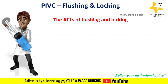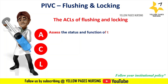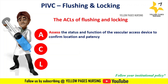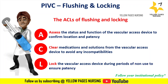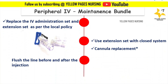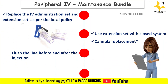Follow the ACL technique for flushing and locking: A — Assess the status and function of the vascular access device to confirm location and patency; C — Clear medications and solutions from the vascular access device to avoid incompatibilities; L — Lock the vascular access device during periods of non-use to ensure patency. Document the date of removal and reason of removal for the intravenous catheter.